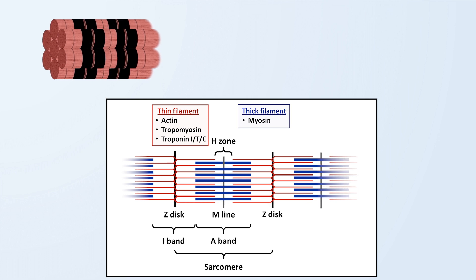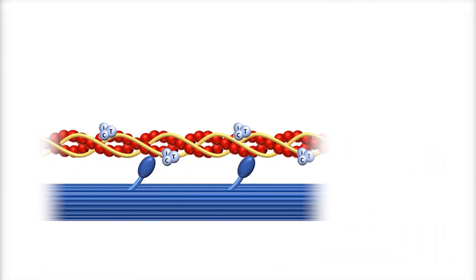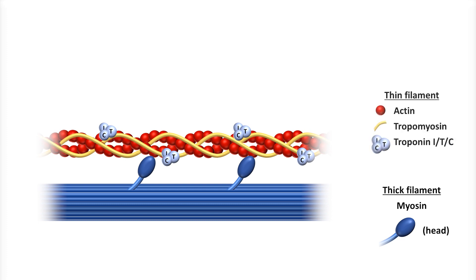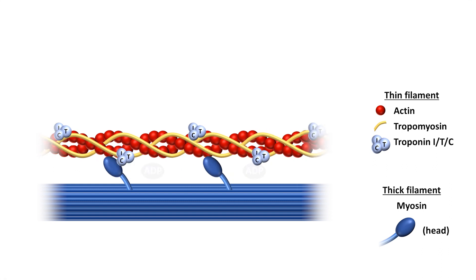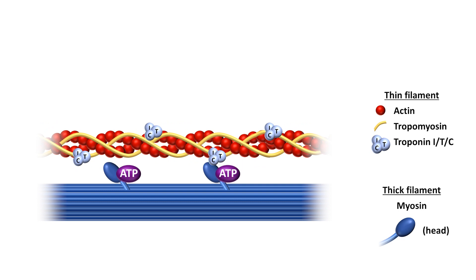Looking at actin-myosin cross-bridge cycling on an even smaller scale, we can see the thick filament composed of numerous parallel myosin proteins, with myosin heads intermittently dispersed along its length. Actin monomers polymerize into the helical thin filament, which is believed to be intertwined with tropomyosin. The three-subunit troponin complex is located at various points along the thin filament. Using the energy of ATP, the myosin head cycles through flexed and relaxed states, intermittently binding to and releasing from actin, resulting in the two filaments sliding past one another.